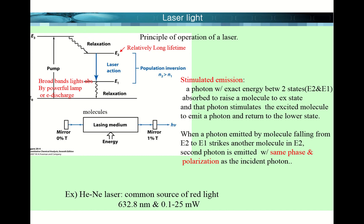Let's learn how a laser beam is generated. The basic idea is stimulated emission. This figure shows electronic energy levels: E0, E1, E2, and E3. Electrons on the E0 ground state level are pumped up — there are several ways to pump electrons to E3, by light or by electron discharge. The excited electrons then relax to lower energy levels.